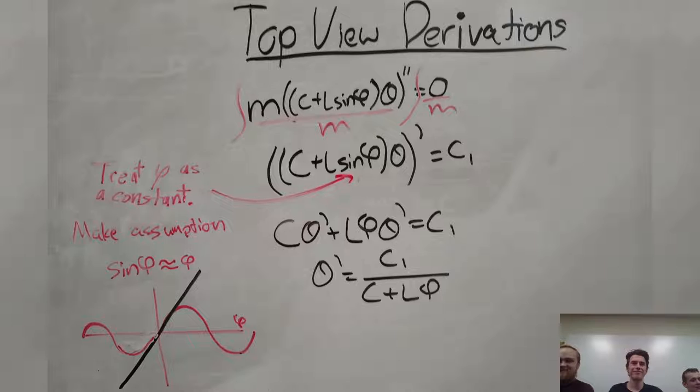So we integrated the equation we derived on the previous slide in order to solve for theta prime. While doing so, we divided both sides by mass. This is significant because it means it doesn't matter the mass of the ball induced in our model. In order to simplify the problem, we need to treat phi as a constant. We can do this because we are setting the equilibrium phi value for our model. Also, we approximated sine phi as phi, as shown in the lower left corner. We drew a graph to show visually why our approximation is valid.